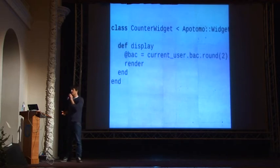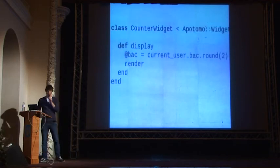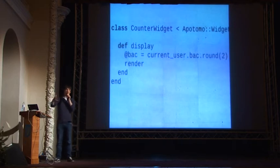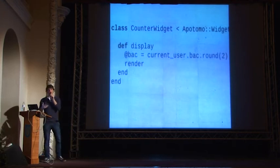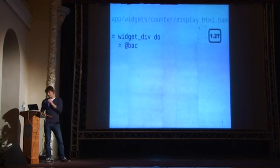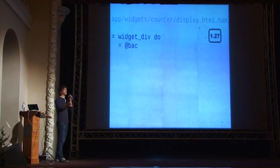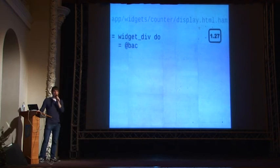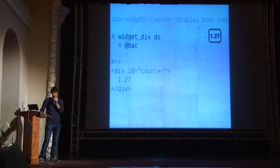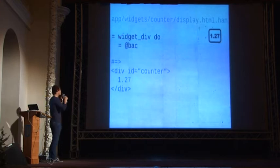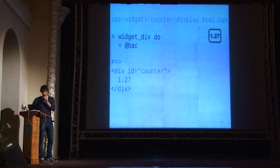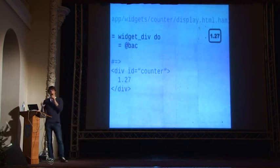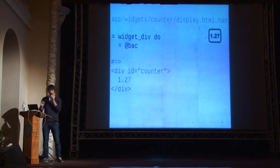We get a widget derived from the Apodomo widget class. In my display method, I retrieve the current blood alcohol concentration, store it in the @bac instance variable, and call render to render the view. The view is very simple — it uses the widget_div helper and renders the blood alcohol concentration. The widget_div helper creates a div and assigns a DOM ID named after the widget. So the standard ID is 'counter' — we need that in order to update this widget.